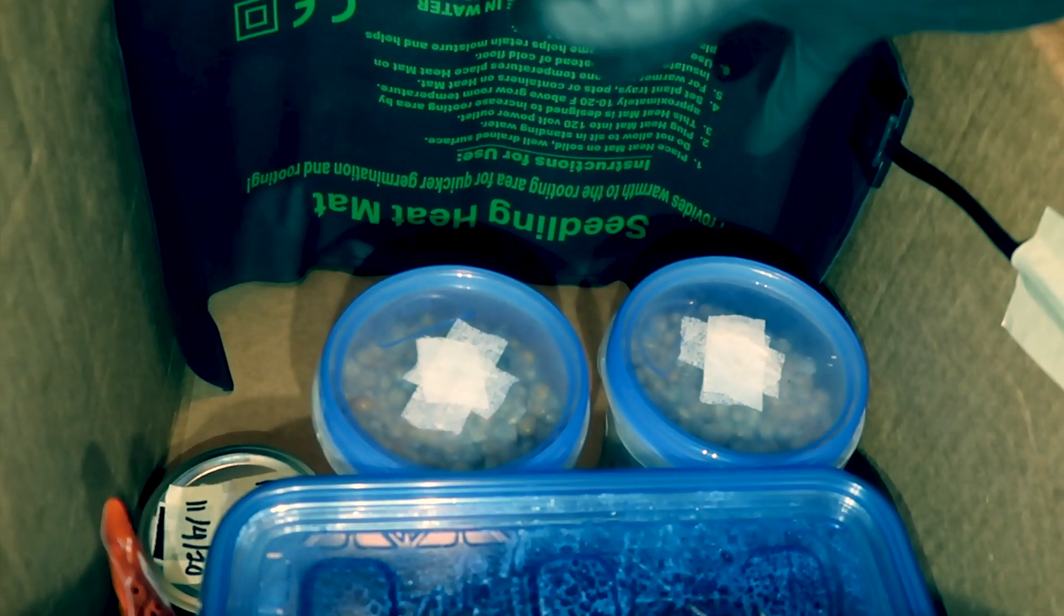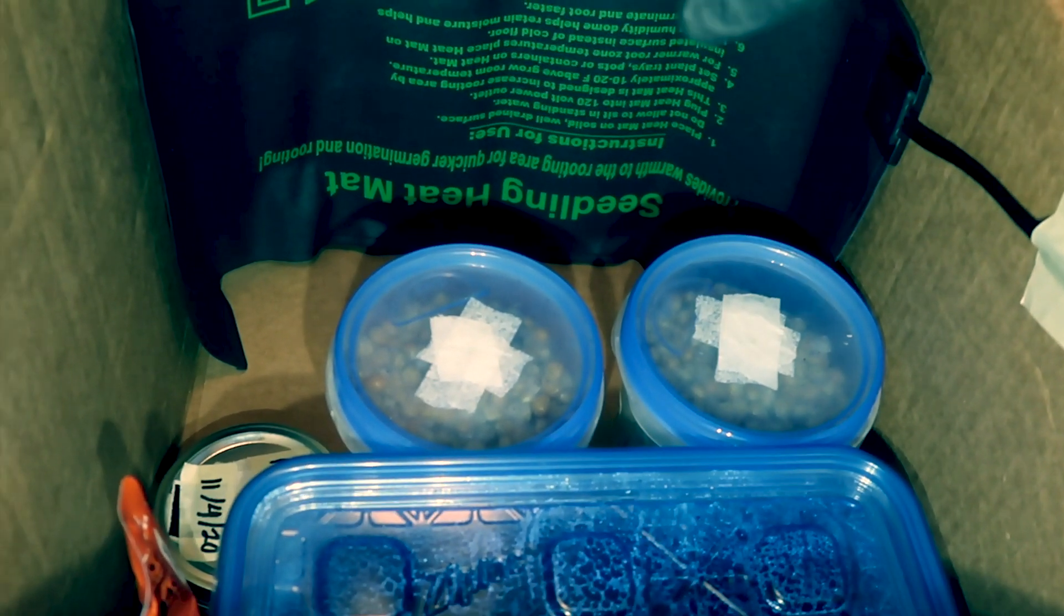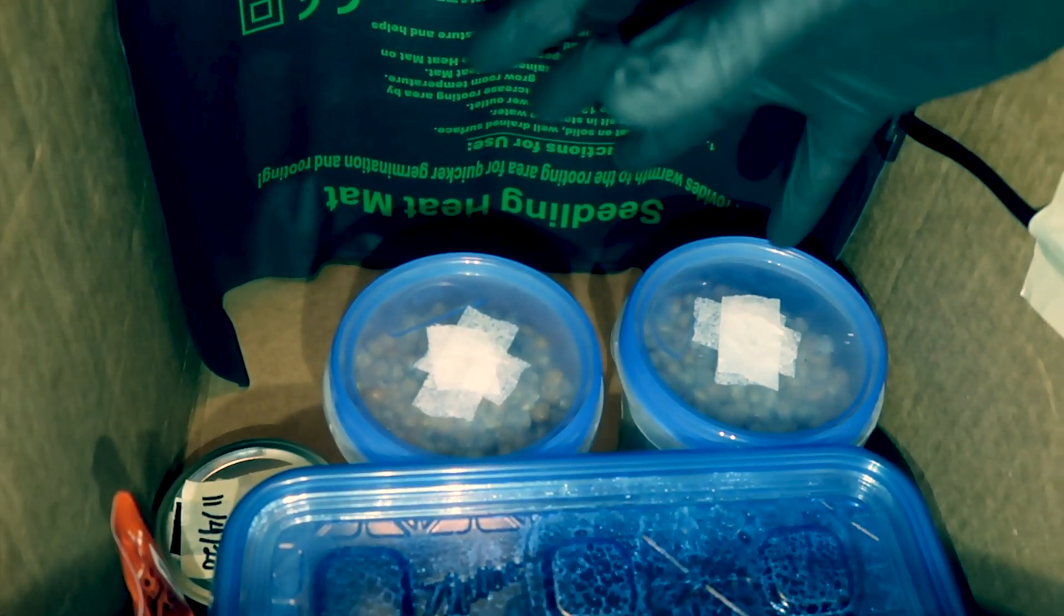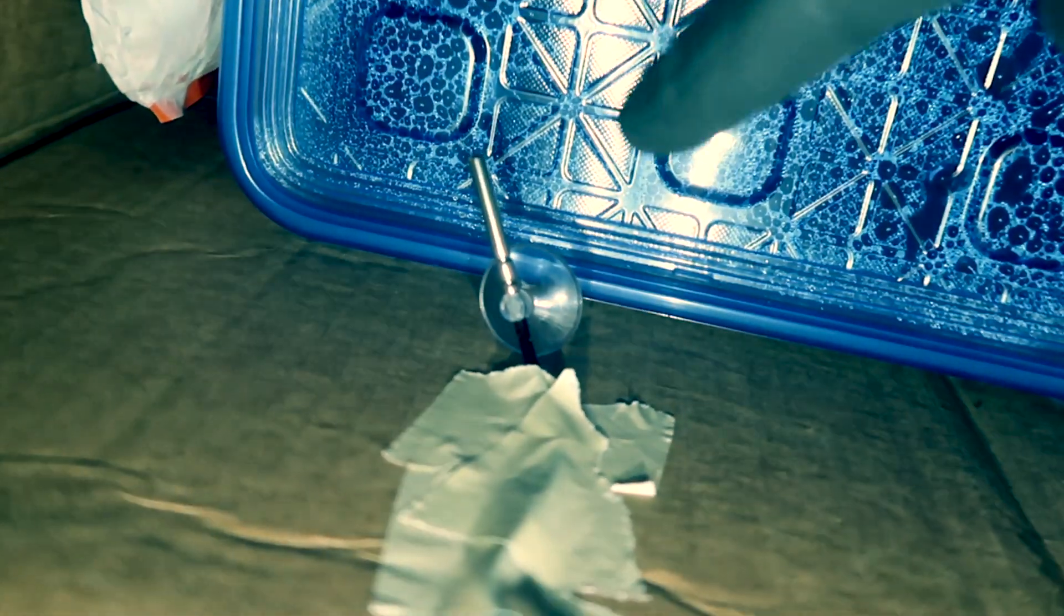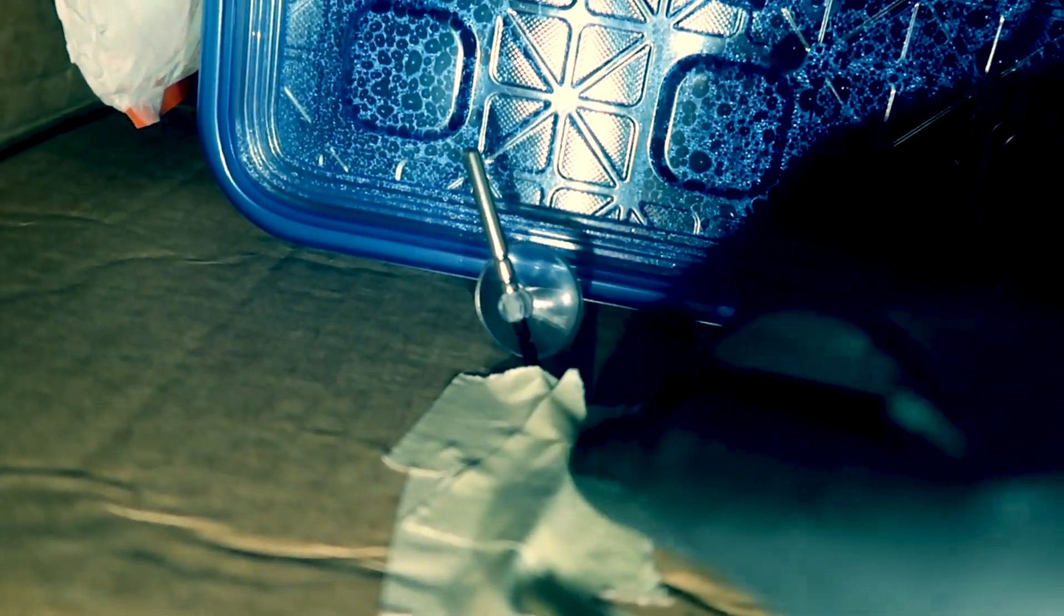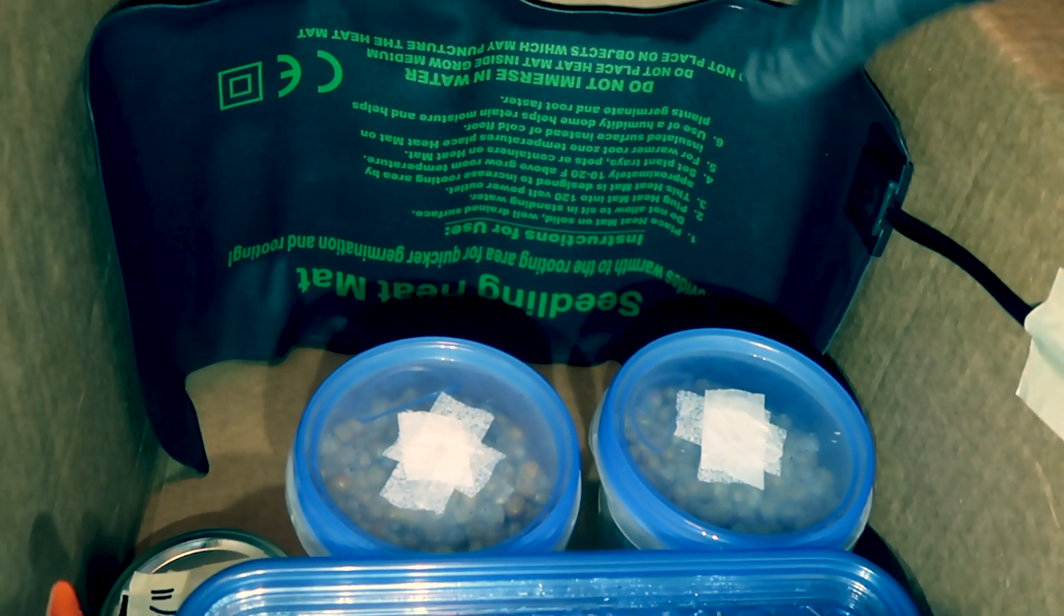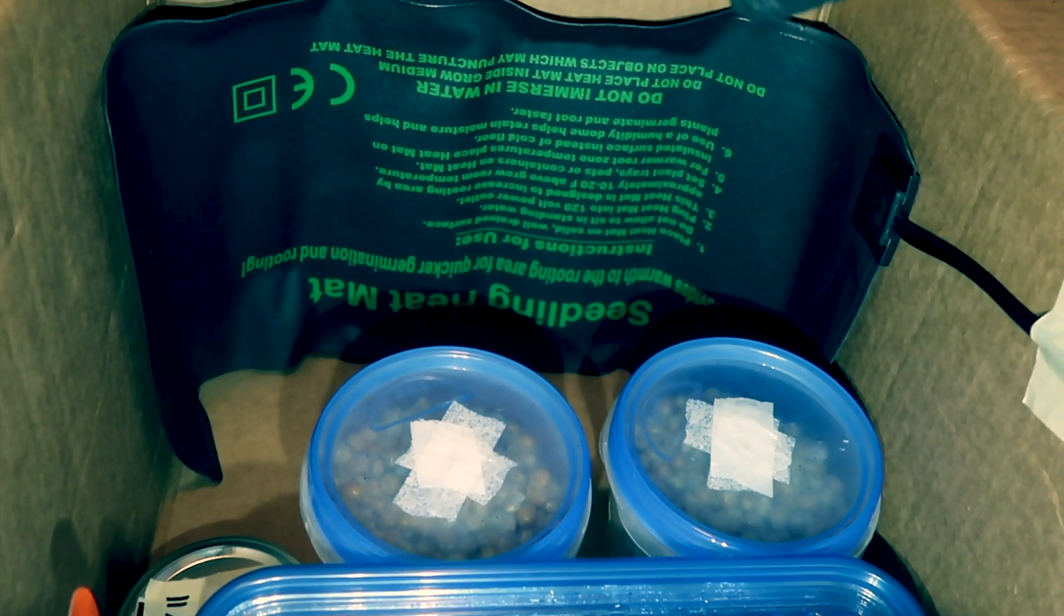So since I have the heating mat over here with the heat coming out towards the grains, I've got the temperature probe here on the other side in order to accurately read that temperature on the other side of the box. This heat mat is designed to increase the temperature around 10 to 20 degrees above ambient temperature.